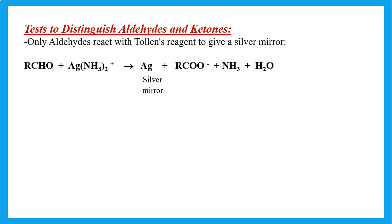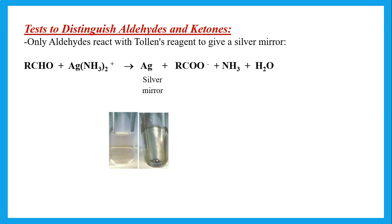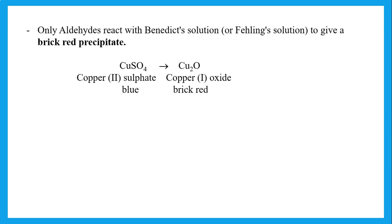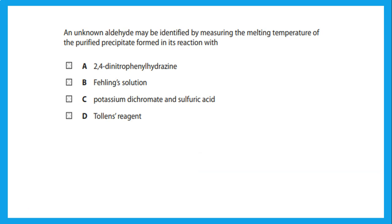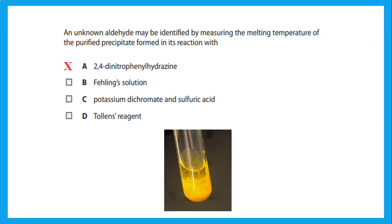To distinguish between aldehydes and ketones: only aldehydes react with Tollens' reagent to give a silver mirror, and only aldehydes react with Benedict's solution or Fehling's solution to give a brick-red precipitate. The brick-red precipitate is due to copper(I) oxide and cannot be used to identify which aldehyde. An unknown aldehyde may be identified by measuring the melting temperature of the purified precipitate formed in the reaction with 2,4-dinitrophenylhydrazine.